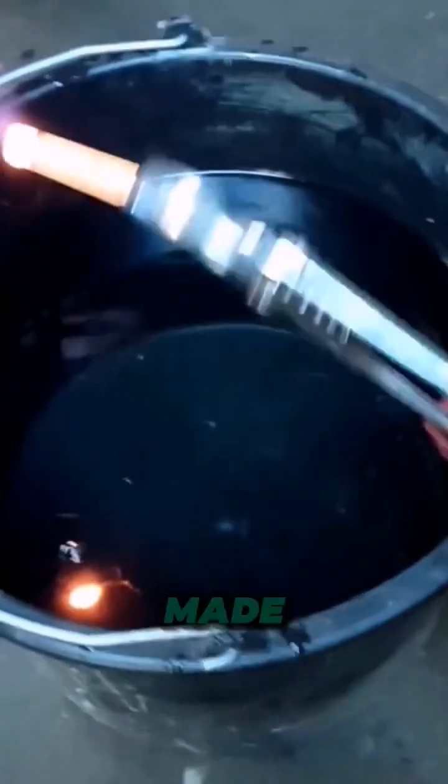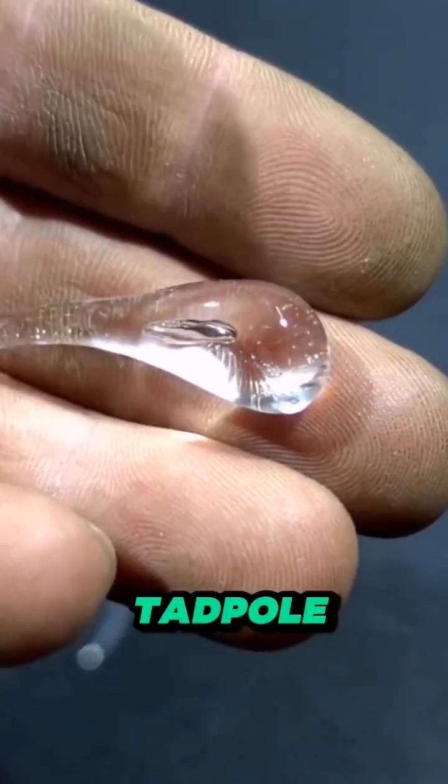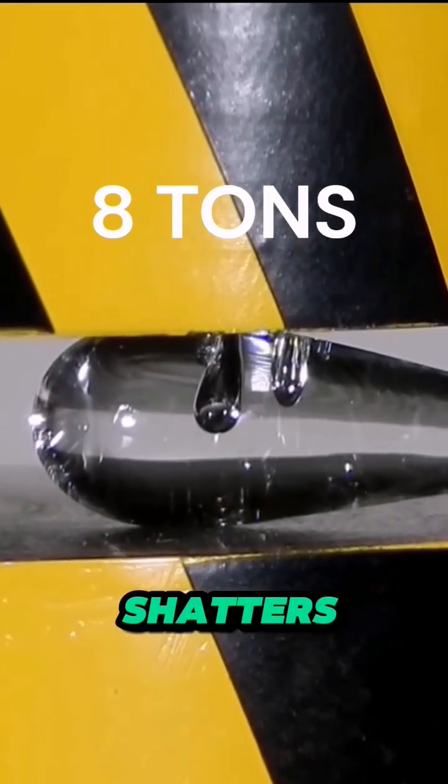Prince Rupert's drops, made by rapidly cooling molten glass in water, result in a tadpole-shaped drop with seemingly magical properties: a super-strong head that resists hammers and bullets, but a fragile tail that shatters the whole drop if broken.